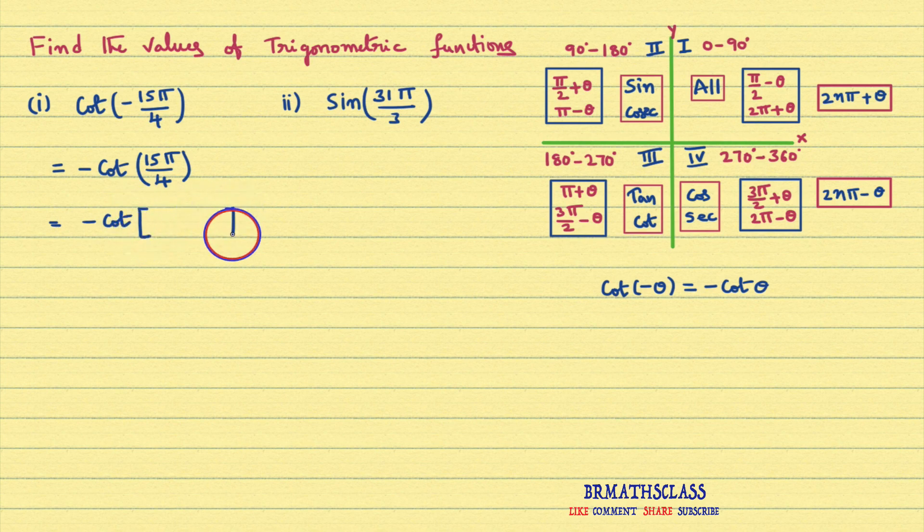Many students feel difficulty in how to split this 15π by 4. I am going to tell you a very easy method. Here π by 4 is there. First you write π by 4 here. Next, without hesitating, simply write π here. Now it's time to think about the suitable symbol, plus or minus. If I write plus here, 4π plus π is 5π by 4, but this is 15π by 4, a bigger number.